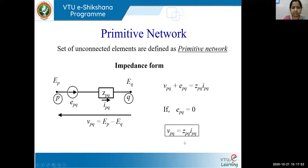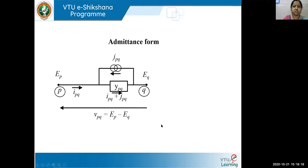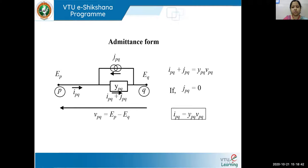Remember, all terminologies used are small letters because you are talking about an individual element. Similarly, when I represent the same concept in admittance form, I'm representing a primitive element in admittance form. We replace the voltages by a current source JPQ. So the current which flows through this element is IPQ. The equation becomes: IPQ plus JPQ equals YPQ multiplied by VPQ. If I make the source zero, my equation becomes IPQ equals YPQ into VPQ.